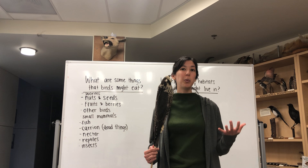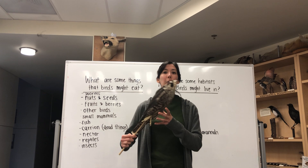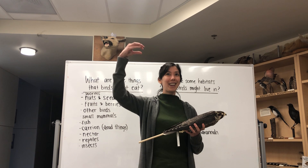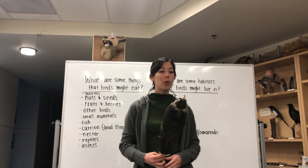When peregrine falcons go into hunting mode they tuck their wings by the side of their body, and in that torpedo shape they can dive down and reach speeds up to 240 miles per hour. This makes them very effective at catching birds that are trying to fly away or are mid-flight when being hunted.